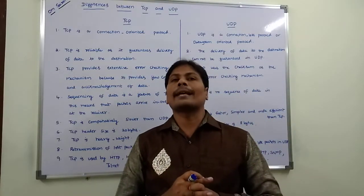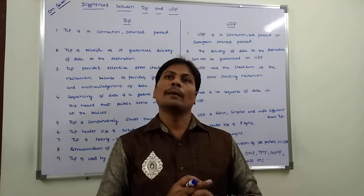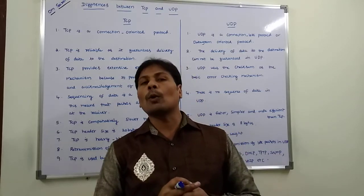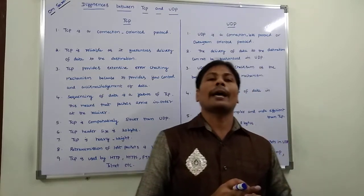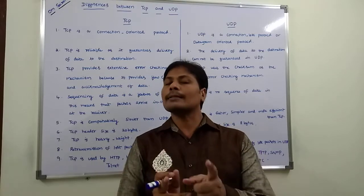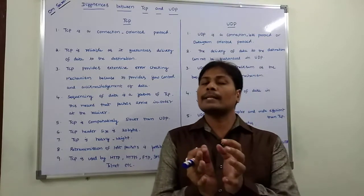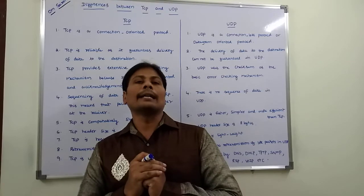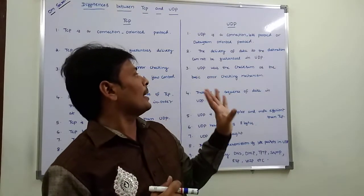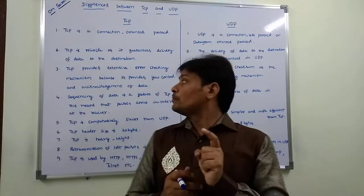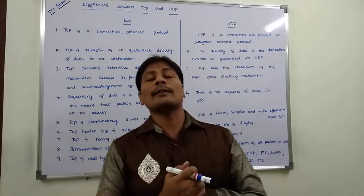Third point: TCP provides an extensive error checking mechanism because it provides flow control and acknowledgement of data. These services are provided in the data link layer and also the transport layer. But in the case of UDP, checksum is used as the error checking mechanism.